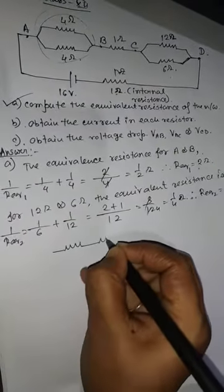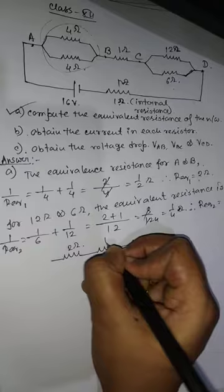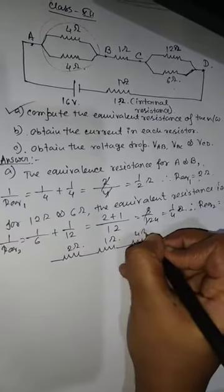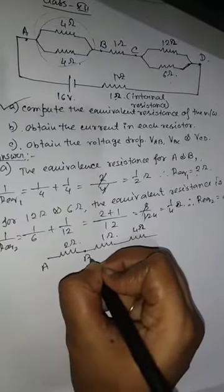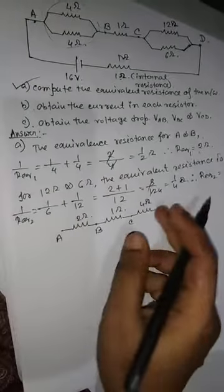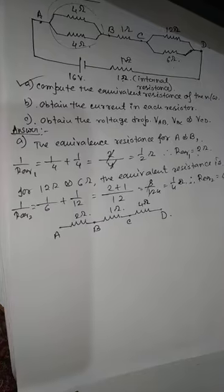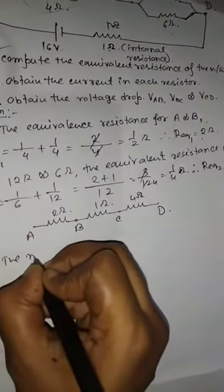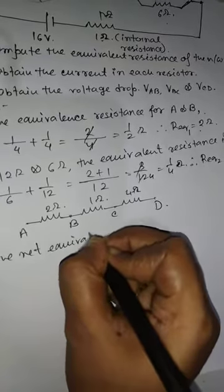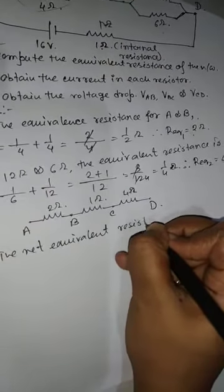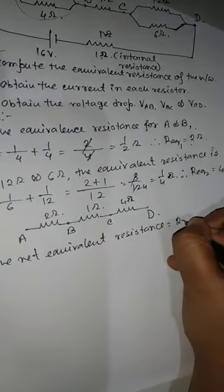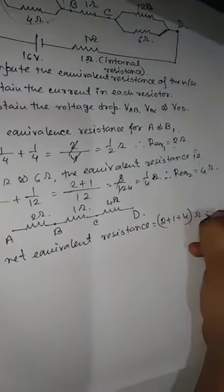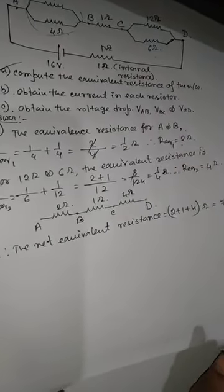So now my circuit becomes: instead of the two parallel resistors I have 2 ohm, then 1 ohm, and then 4 ohm, with points A, B, C, and D. These three are in series combination. So the net equivalent resistance equals 2 plus 1 plus 4 ohm, that will be 7 ohm. This is the total equivalent resistance — part A is computed.